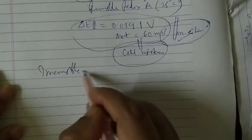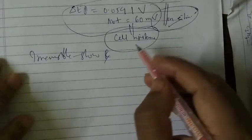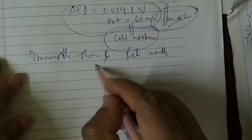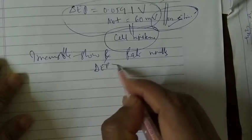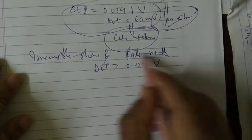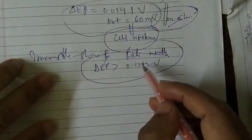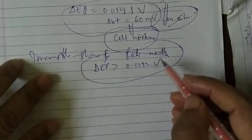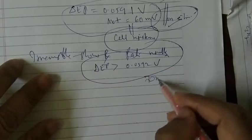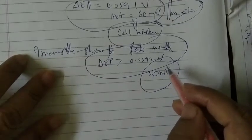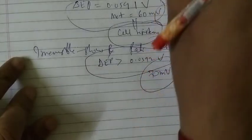For an irreversible reaction, which involves a slow electron transfer process, the peak separation ΔEp is greater than 0.0592 volts — that is, greater than about 70 millivolts for one electron transfer.